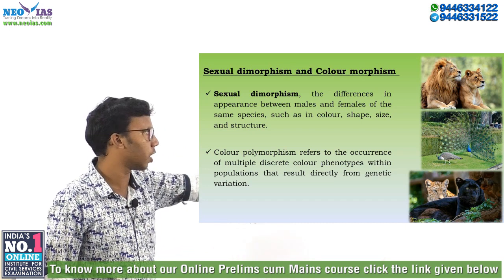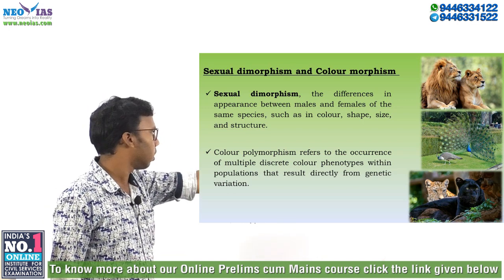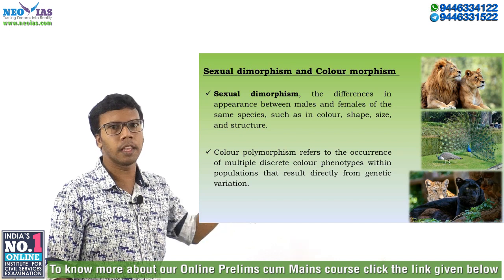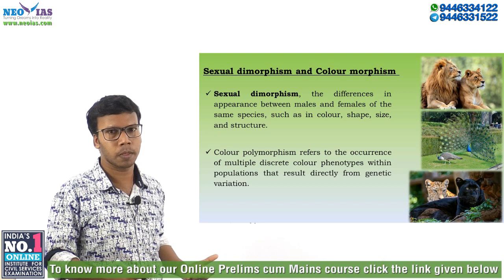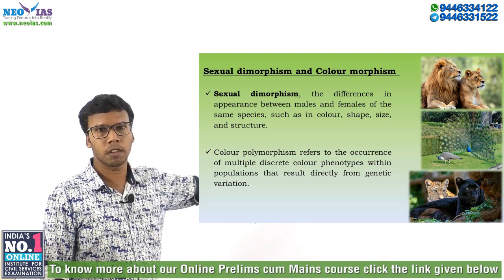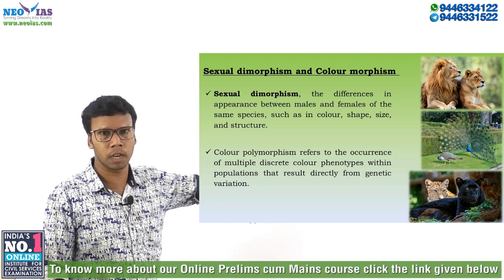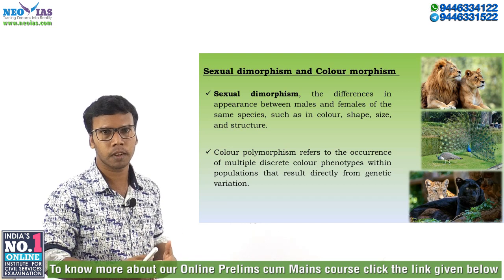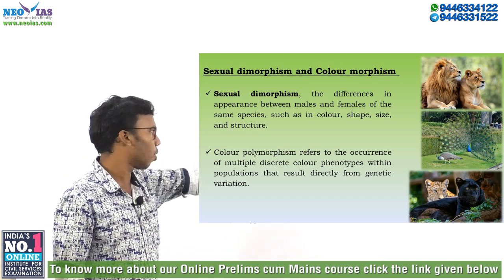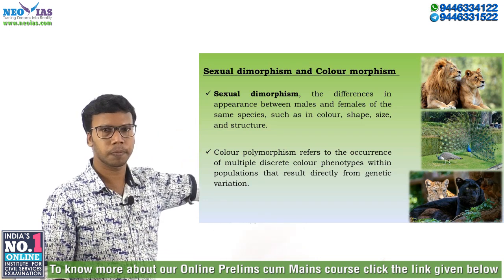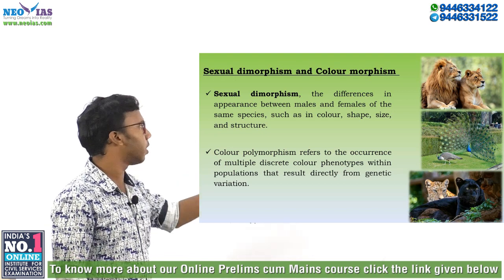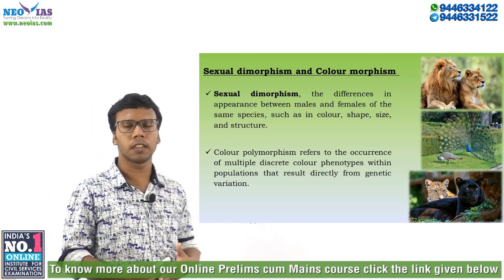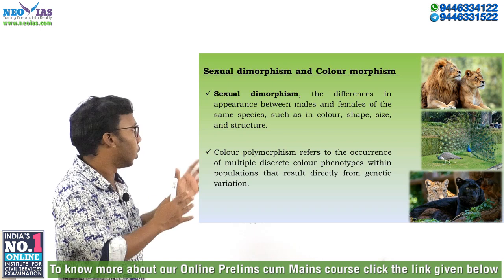In the picture you can see a common leopard and in front of it a black panther. The black panther is actually a color morph of the common leopard — if a common leopard has more melanin content, it becomes black and is called a black panther. Similarly, a black-colored jaguar is also termed a black panther. Both are named black panther but belong to different species. This is color morphism: the occurrence of multiple discrete color phenotypes within the same population resulting from genetic variation.